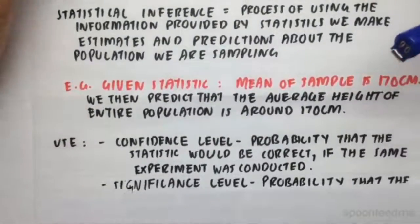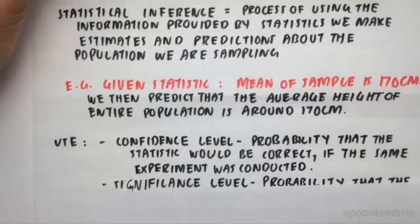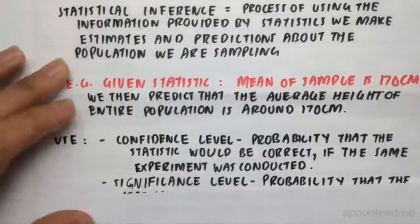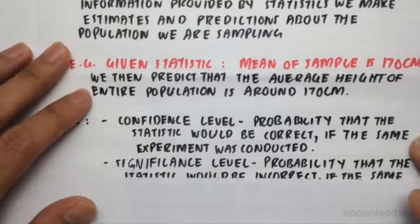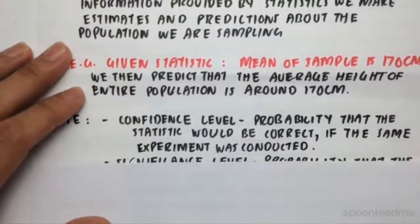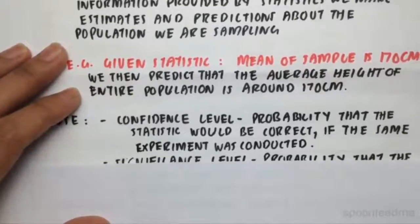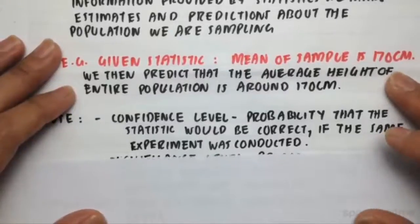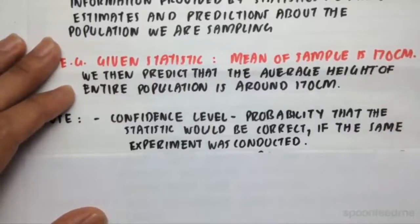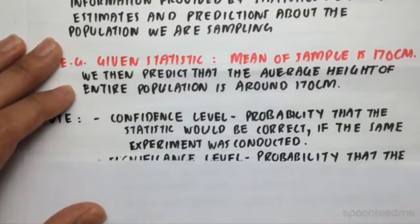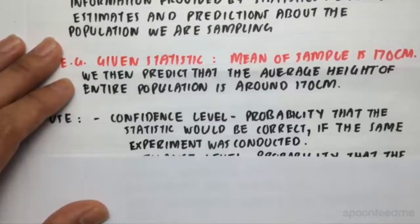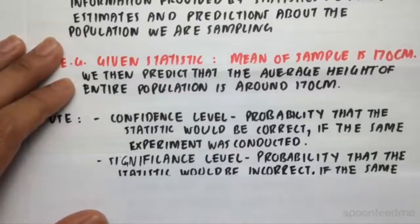So what do we actually use this data for? There are a lot of uses. So we have a confidence level, and that gives us the probability that the statistic would be correct if the same experiment was conducted. So for example, if we did have a high confidence level, that would mean that most likely, if we did repeat the trial or experiment over and over again, we get a similar result. So of course, for every experiment, we want to get a high confidence level as possible.